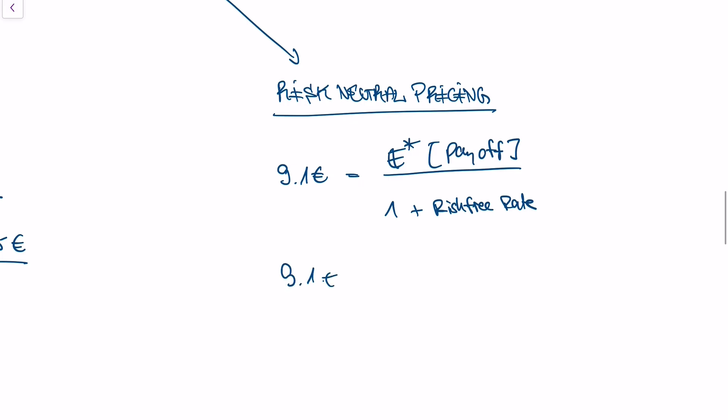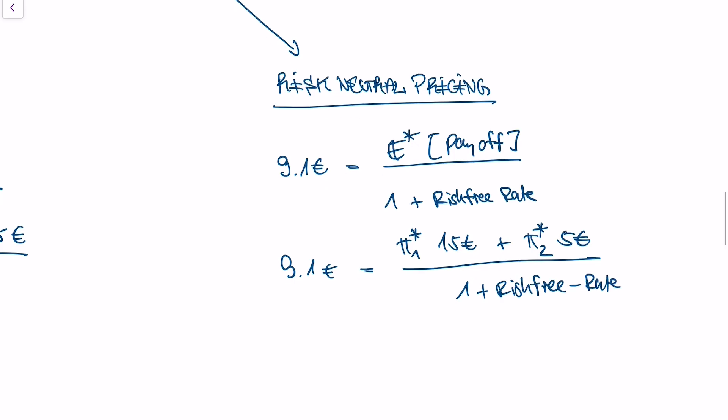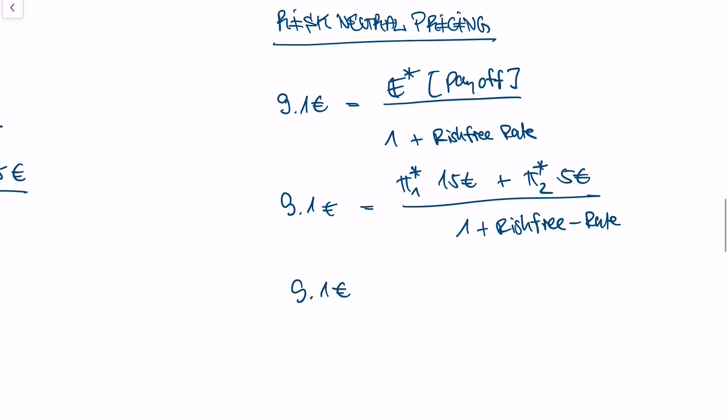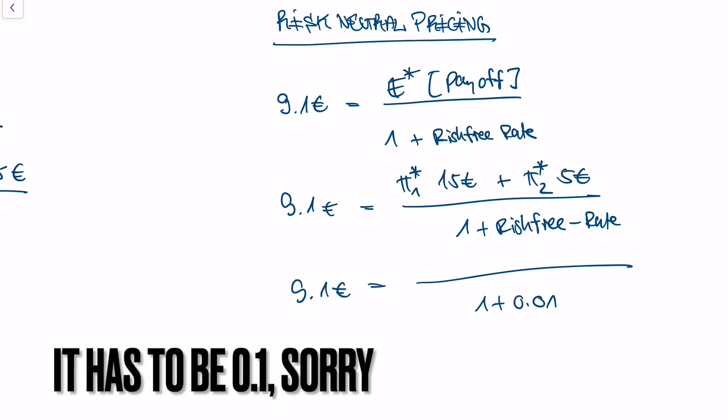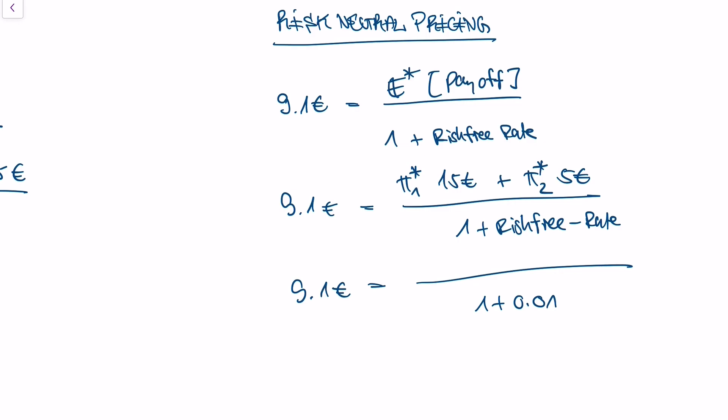We have our price, 9.1 euros, and we take risk neutral probabilities, which I call here pi star 1, and our other risk neutral probability, which I call here pi star 2, and we divide it with 1 plus the risk free rate. I know that the risk free rate is 10%. So in our denominator, we have 1.10. And as our risk neutral probabilities need to add up to 1, we can actually derive what they have to be.